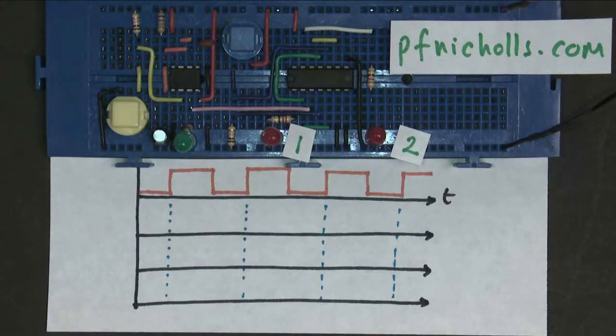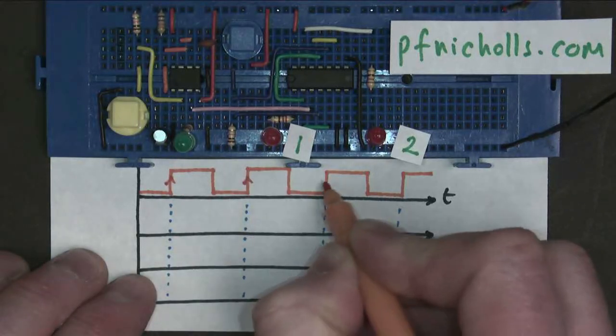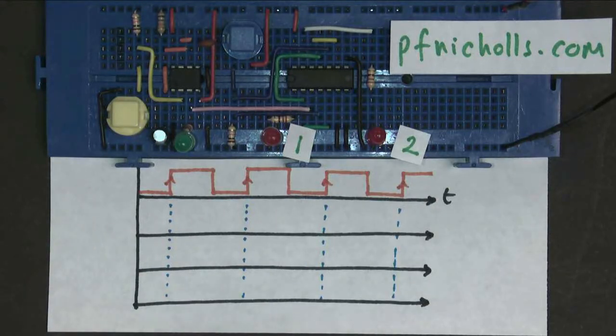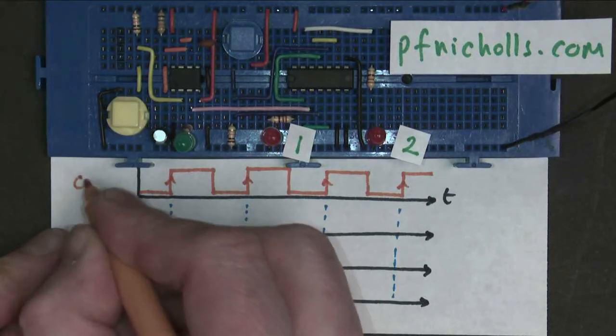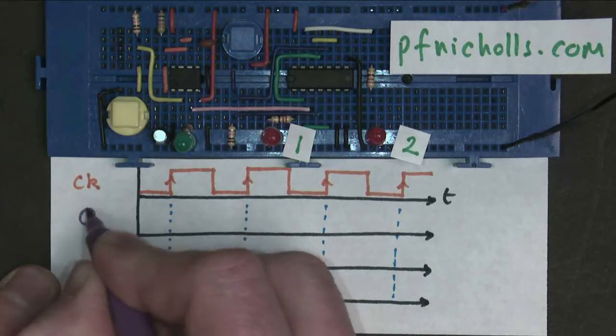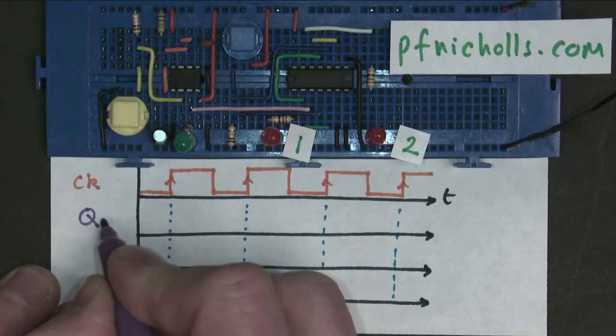So here I have drawn my monostable clock pulses. I've got one rising edge, two rising edge, three rising edge, four rising edges. And that is my clock, the yellow button. I'm going to first of all draw the output Q, which represents this LED here. So I'll label it Q1.